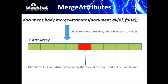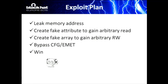During the merge, the first node in the newly created CAttribute array is just skipped without being initialized. So it gives us an uninitialized CAttribute value which can be accessed in JavaScript.